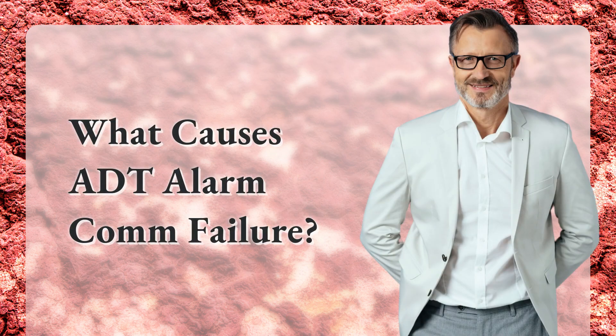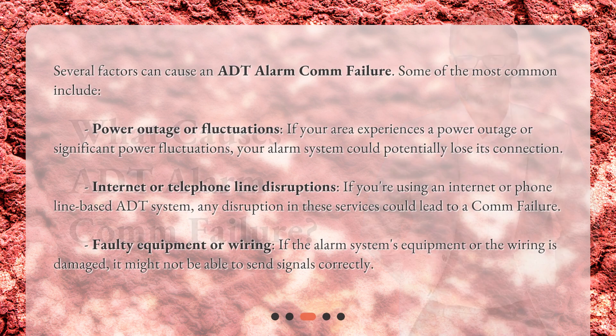What causes ADT alarm comm failure? Several factors can cause an ADT alarm comm failure. Some of the most common include: power outage or fluctuations — if your area experiences a power outage or significant power fluctuations, your alarm system could potentially lose its connection. Internet or telephone line disruptions — if you're using an internet or phone line based ADT system, any disruption in these services could lead to a comm failure. Faulty equipment or wiring — if the alarm system's equipment or the wiring is damaged, it might not be able to send signals correctly.